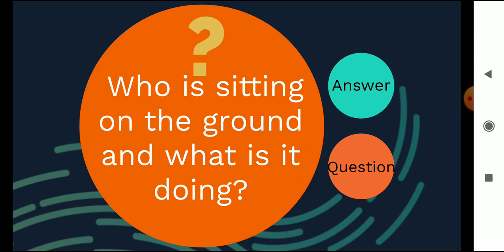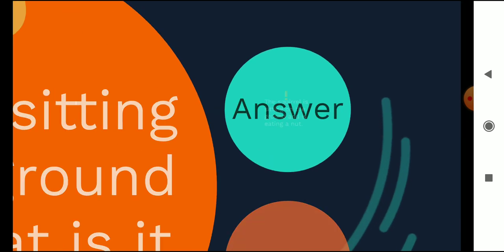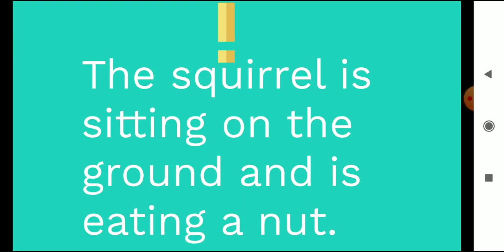Next up, let's see some questions about the poem. Who is sitting on the ground and what is it doing? You should be able to answer this. Who is sitting on the ground? Correct. The squirrel is sitting on the ground and what is it doing? It's eating a nut. The squirrel is sitting on the ground and is eating a nut. Here is the answer.